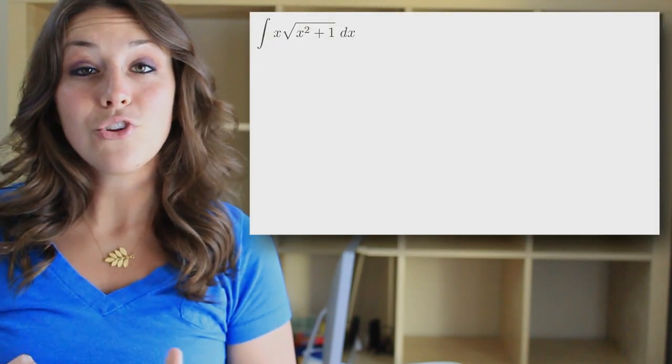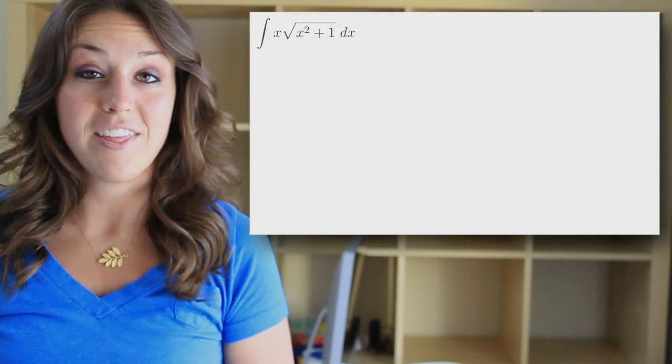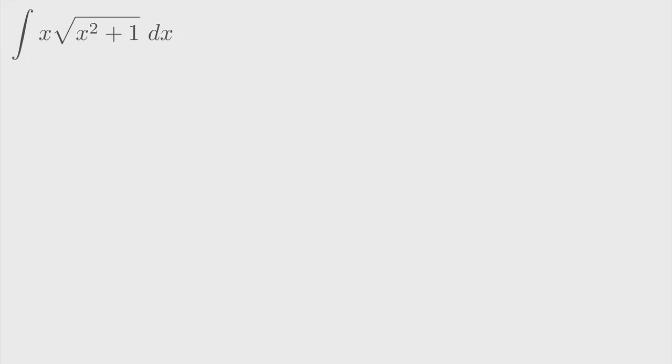U-substitution is a great method to try before the others because it's usually the easiest and the fastest method. It allows you to take a complicated piece of your integral and call it u, thereby simplifying the integral significantly. To perform a u-substitution, you need to identify u, then take the derivative of u, which you'll call du.